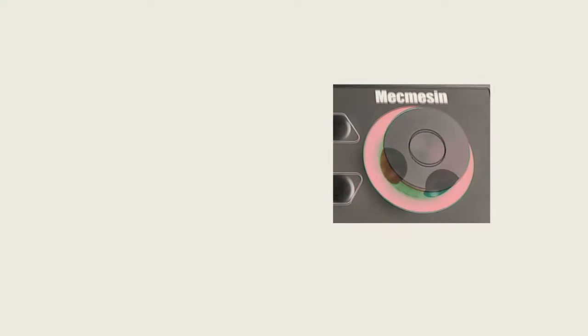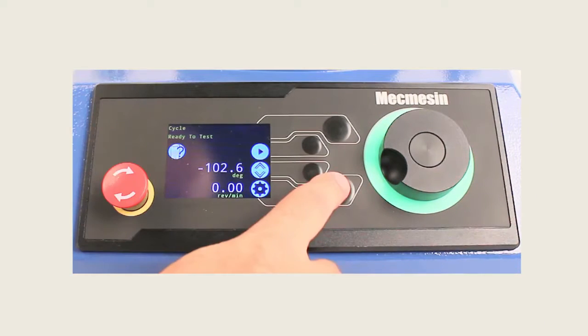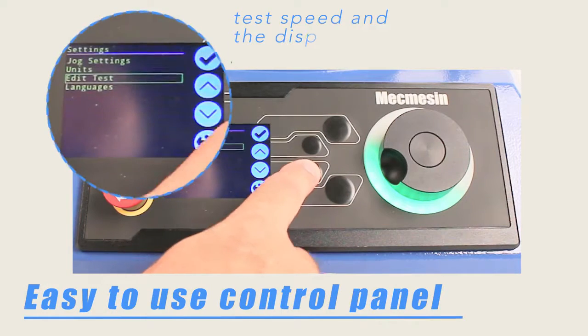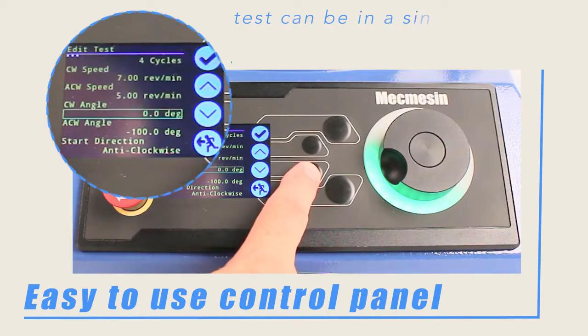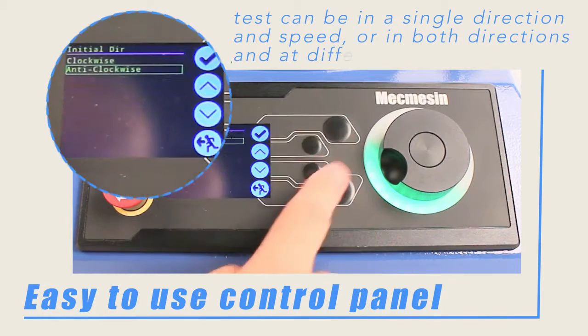The control panel can be used to set and display the test speeds and the displacement in degrees or number of revolutions with digital accuracy. The test can be in a single direction and speed, or in both directions and at different speeds.